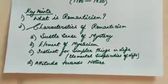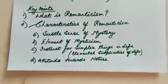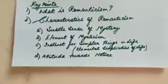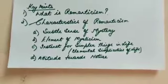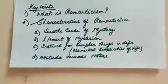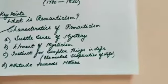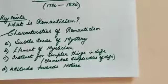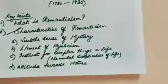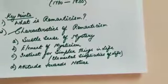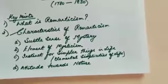A famous critic, Pater, goes on to say that Romantic characters consist in the addition of strangeness to beauty. The desire of beauty, continues Pater, being a fixed element in every artistic organization, it is the addition of curiosity to this desire of beauty that constitutes the romantic temperament. We can also say that curiosity and the love of beauty are certain integral factors in Romanticism — the one intellectual and the other emotional.